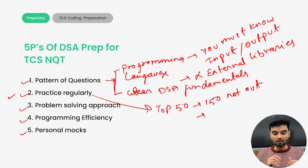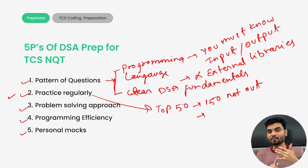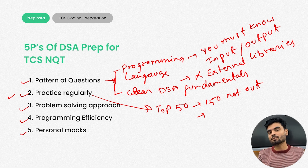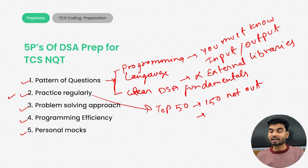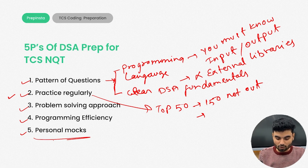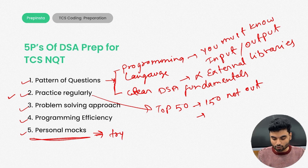Now the fifth P — the last important thing: personal mocks. Once you've done fundamentals of programming and DSA and enough practice, try to simulate real coding exam scenarios. For example, you have three questions and 90 minutes — take a clock, start recording, start solving, and explain to yourself. Then watch it back to see where you're going wrong. Personal mocks are super important. Use previous year question papers from PrepInsta for these mocks — sit with a proper time window, no disturbances, and simulate a real coding interview with a fixed time limit.